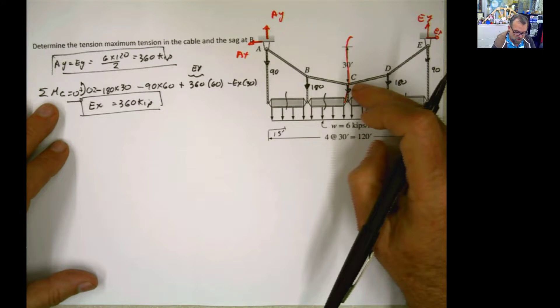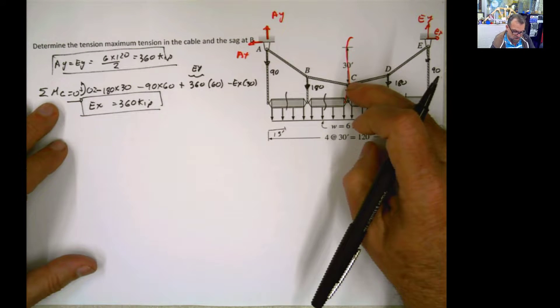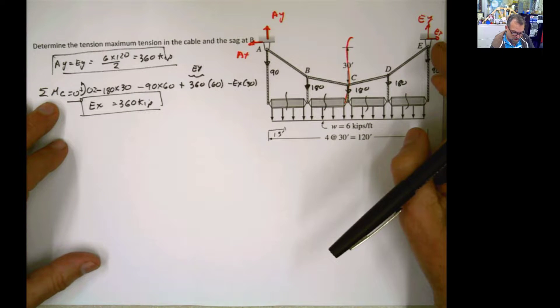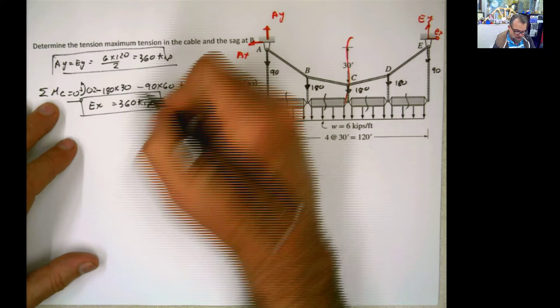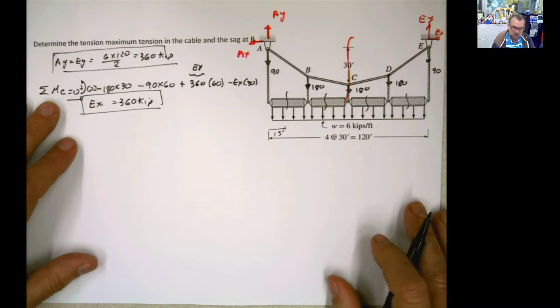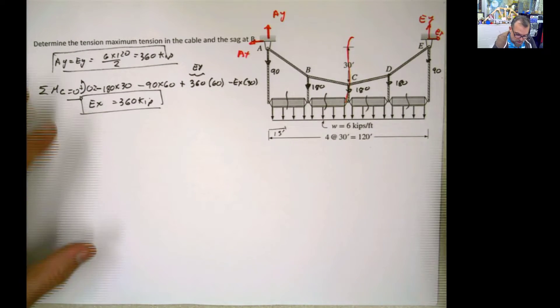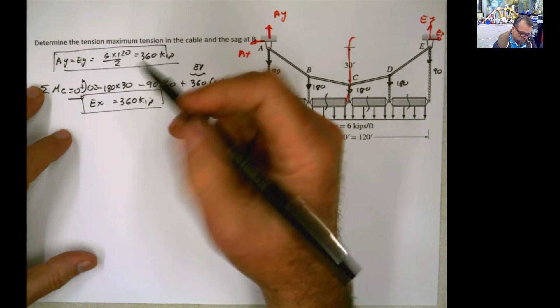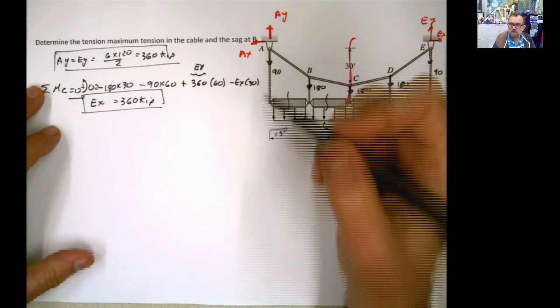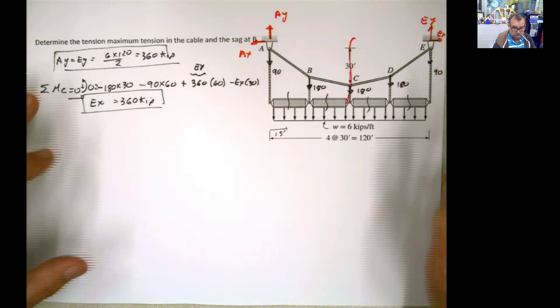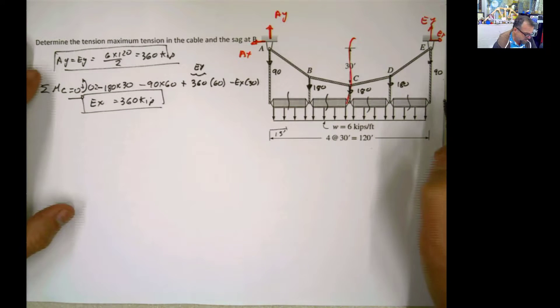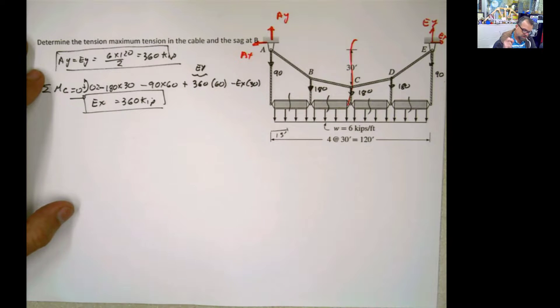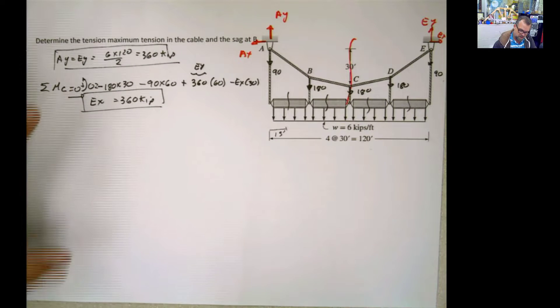Now, once we know how much is Ex, and we know how much is Ay, or Ey, then you're going to jump immediately. And you're going to say, oh, I know this. The tension is just Ex squared plus Ey squared, square root of that, because we did that before. Yeah, but before was before, and now is now. So be very careful what is happening here. Pay attention to this little big detail.